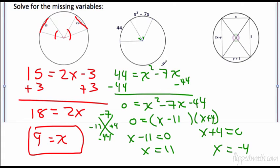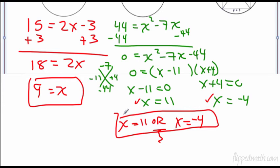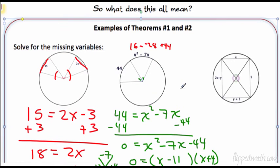You can't have a negative arc length — but you still need to plug in both values to check. When you plug in x equals 11: 121 minus 77 equals positive 44. Good. When you plug in x equals negative 4: positive 16 minus negative 28 equals positive 44. That arc length is also positive, so x equals negative 4 is valid too. Your answer is x equals 11 or x equals negative 4 — either one can be an answer.